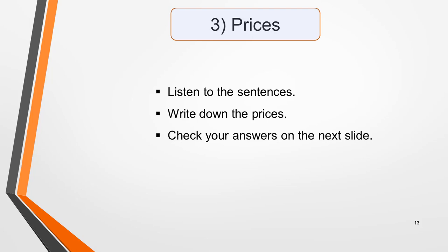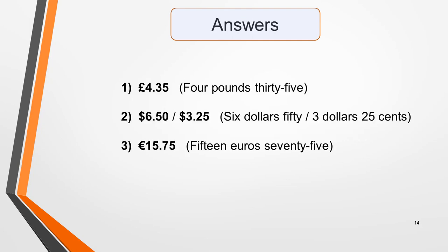1. The fare for the bus to Glasgow is £4.35. 2. Tickets cost $6.50 for adults and $3.25 for children. 3. If you pay in advance for the full river cruise, it will be $15.75. Here are the answers — again, if you made any mistakes, go back and listen again.